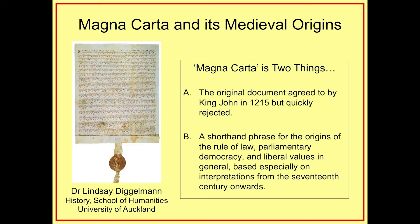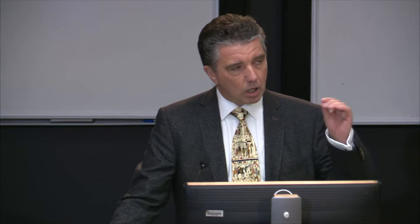It refers to the original document agreed to by King John in 1215, but very quickly rejected, and in fact a complete failure in its own day. But it's also come to stand as a sort of shorthand phrase for a whole set of values, including the rule of law, which was certainly in the original document, but others as well, such as representative democracy and civil liberties — a lot of which actually arises much later from the conflict between Parliament and the Stuart King, Charles I, in the 17th century.